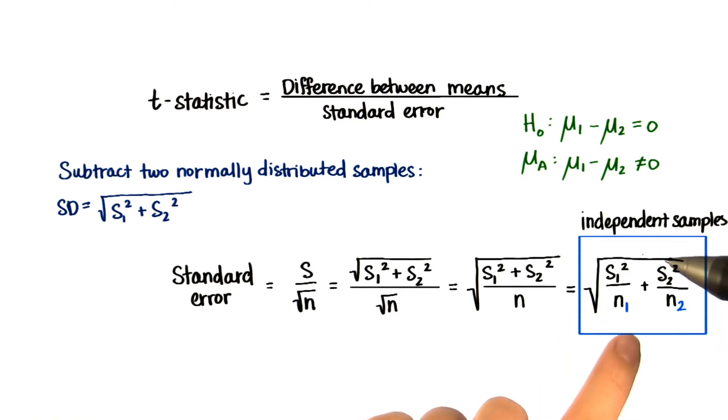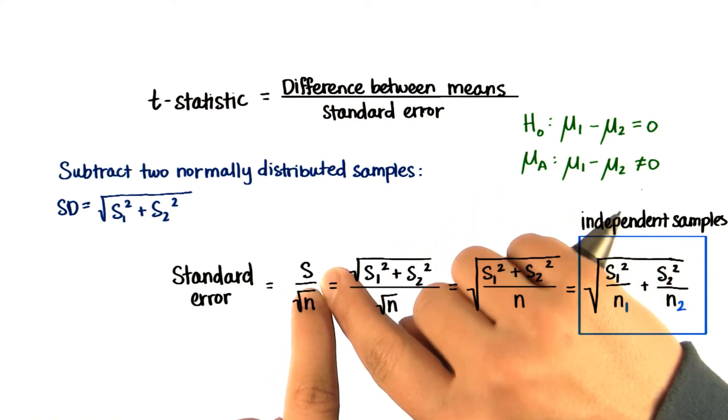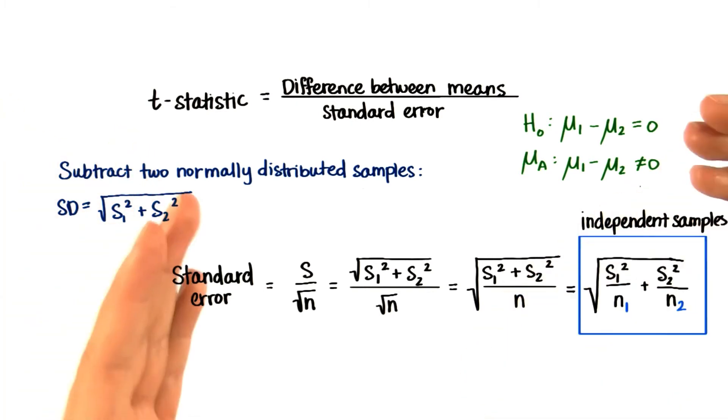Before, with paired data, or dependent samples, we could simply calculate the difference between each value for each subject. And then we could calculate the standard deviation. Therefore, before we just had that one s. But now, we have two different samples, and they can each be different sizes.